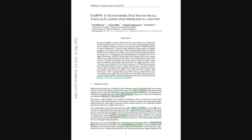Looking at those detailed performance breakdowns really just reinforces the main story here. The bottom line with Tab PFN is its incredible speed for these smaller tabular datasets — it basically gives you state-of-the-art results comparable to complex AutoML systems, but in a fraction of a second. It really provides a powerful and super-fast new baseline for a lot of common tasks. That wraps up our look at Tab PFN today. Thanks so much for tuning in to the AI Research Roundup. I'm your host, Alex.